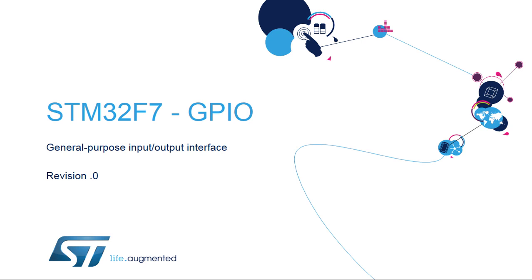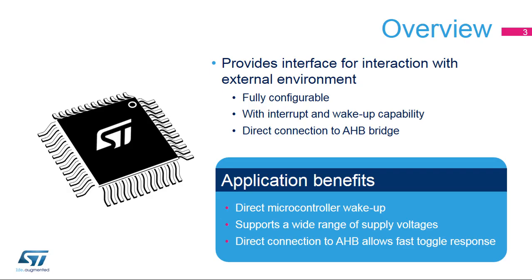Hello, and welcome to this presentation of the STM32 General Purpose I/O Interface. It covers the General Purpose Input and Output Interface and how it allows connectivity to the environment around the STM32F7 microcontroller. The General Purpose I/O pins of STM32 products provide an interface with the external environment. This configurable interface is used by the MCU as well as other embedded peripherals to interface with both digital and analog signals.